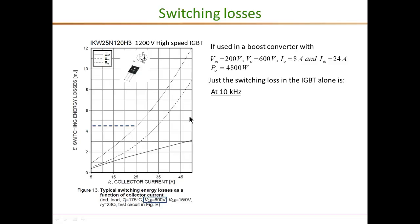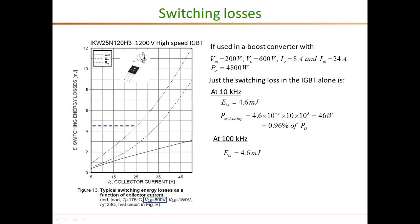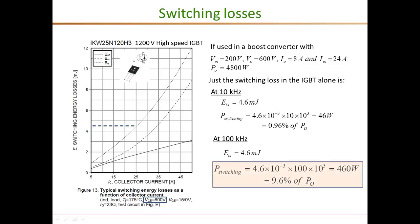Using this information, in our example with a switching frequency of just 10 kilohertz, the total switching losses can be calculated. At the given current of 24 amperes and 600 volt operation, the total energy loss comes out to be about 4.6 millijoules. That times the switching frequency of 10 kilohertz gives a total power loss of 46 watts, which is roughly 1% of the total power. If you increase the switching frequency to 100 kilohertz, the total energy per switching transition is still 4.6 millijoules, but the average power loss becomes 460 watts — almost 10% of total output power.